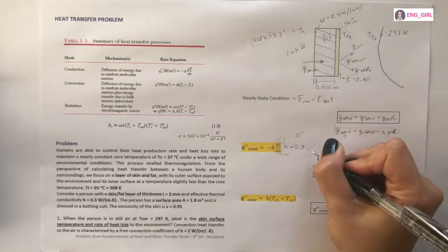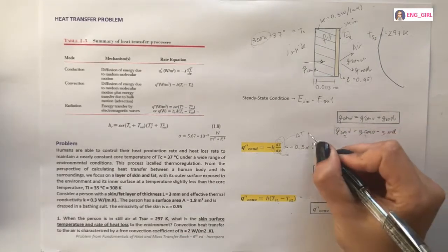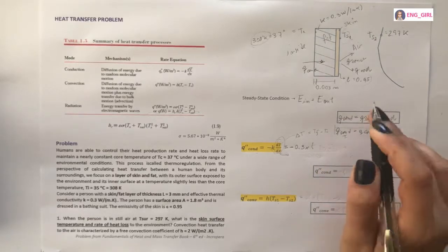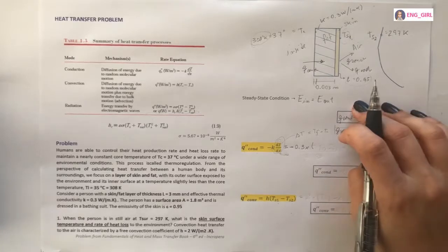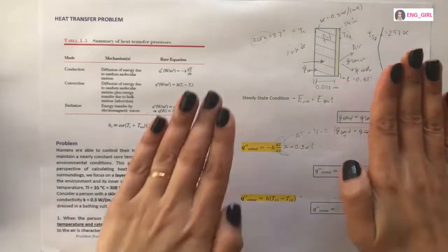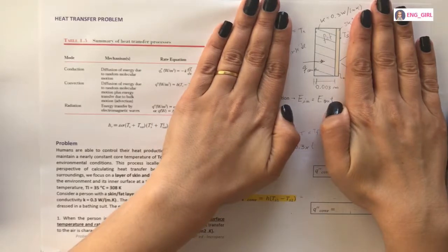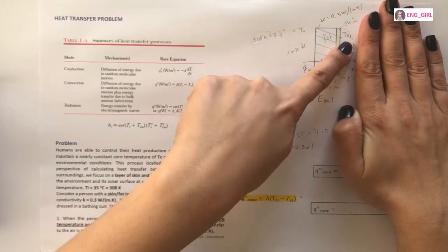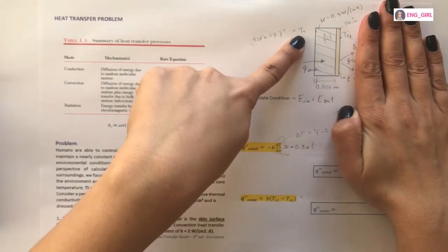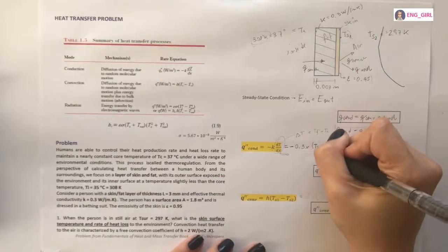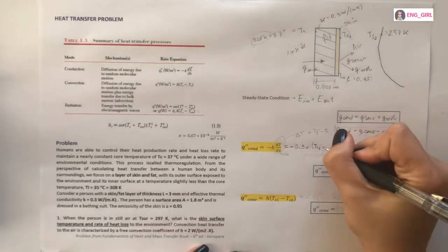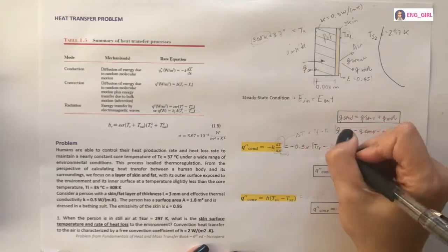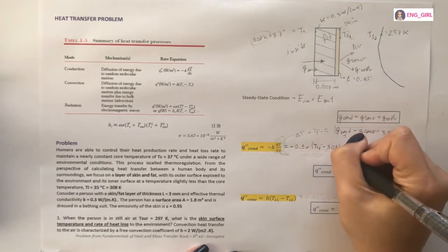Just remember delta t is final t less initial t. In this case, how we are working with conduction, we have to consider this part only. Our t final would be TS1 and initial t inside. TS1, which we are looking for, less t inside, 308 kelvins.